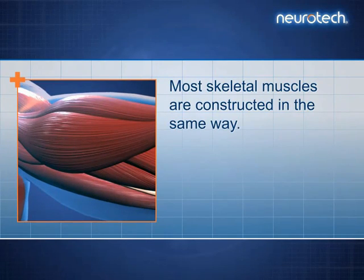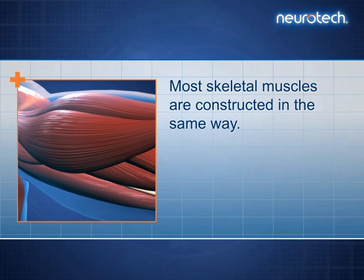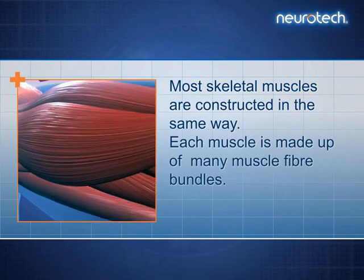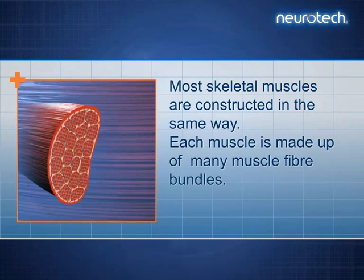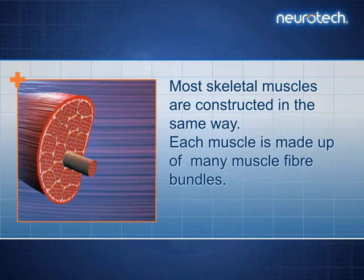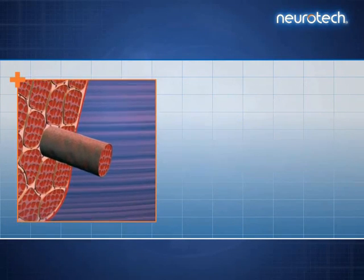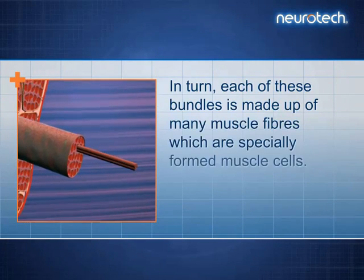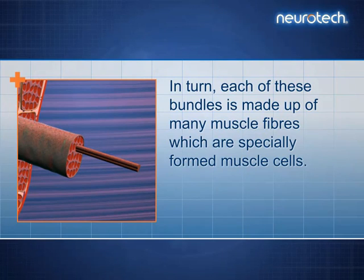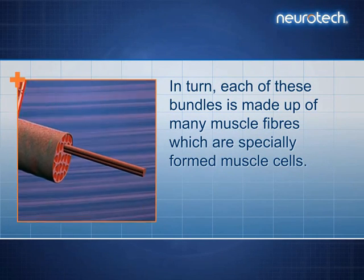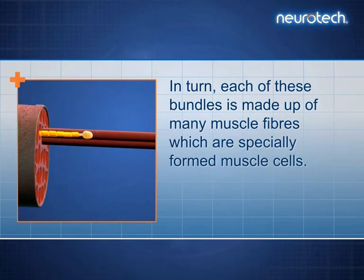Most skeletal muscles are constructed in the same way. Each muscle is made up of many muscle fibre bundles. In turn, each of these bundles is made up of many muscle fibres, which are specially formed muscle cells.